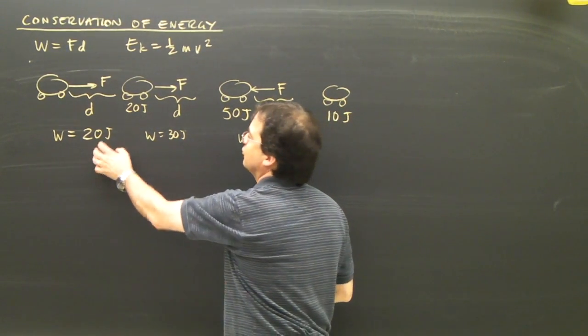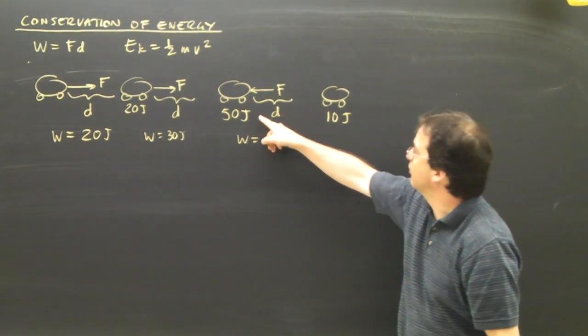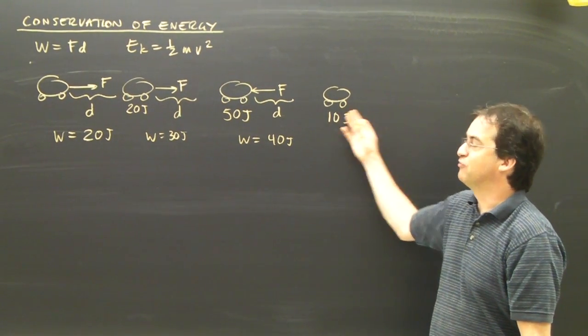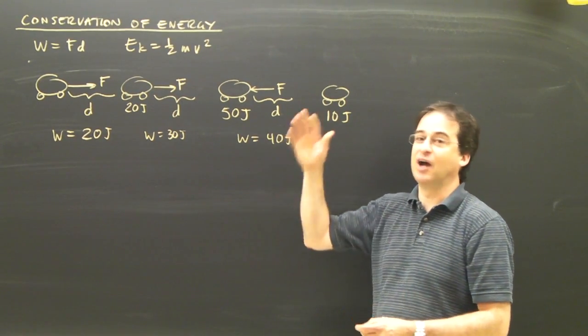All you're doing is adding energy every time you do work or subtracting energy any time you do work. And you calculate the amount you've added or subtracted by using work as force times distance, and then you can find out how much energy it has at any point. You can also do this for things moving up or down, and we're going to do that too.